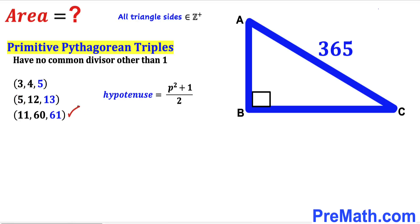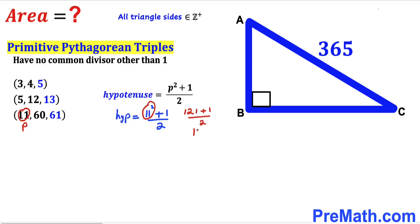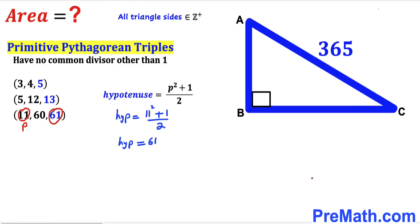Now let's focus on the last example. Let's assume that 11 is our p. The hypotenuse is (11² + 1) / 2. We know 11² is 121, plus 1 is 122, divided by 2 equals 61. So the hypotenuse is equal to 61, and indeed our hypotenuse is 61.